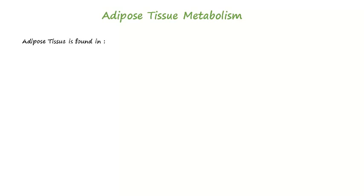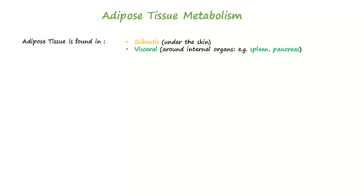The adipose tissue is located in the subcutis, around the viscera, in the bone marrow, breast tissue, and intermuscular adipose tissue.